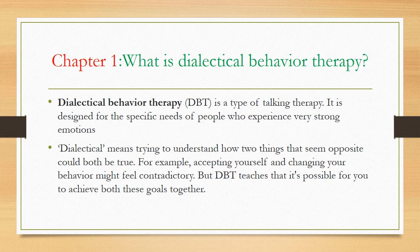DBT is a type of talking therapy designed especially for people who experience very strong emotions. It is a modified type of cognitive behavior therapy. Its main goals are to teach people how to live in the moment, develop healthy ways to cope with stress, regulate their emotions, and improve their relationships. The term 'dialectic' means trying to understand how two things that seem opposite can both be true — for example, accepting yourself while also changing your behavior.